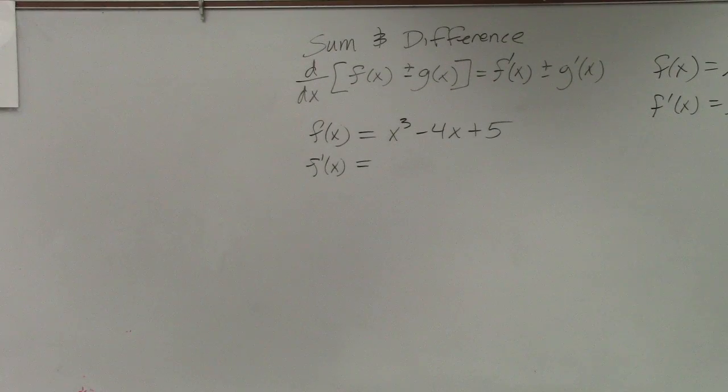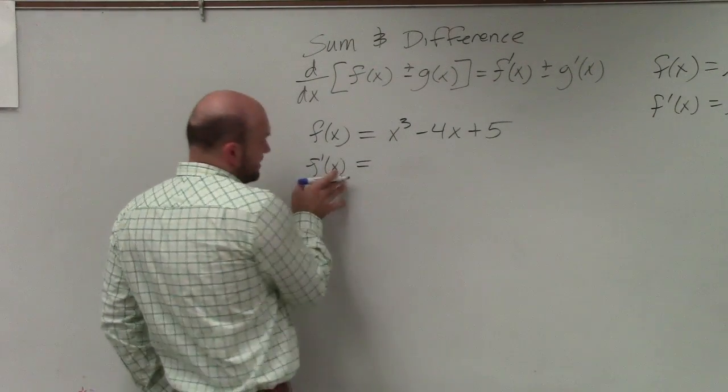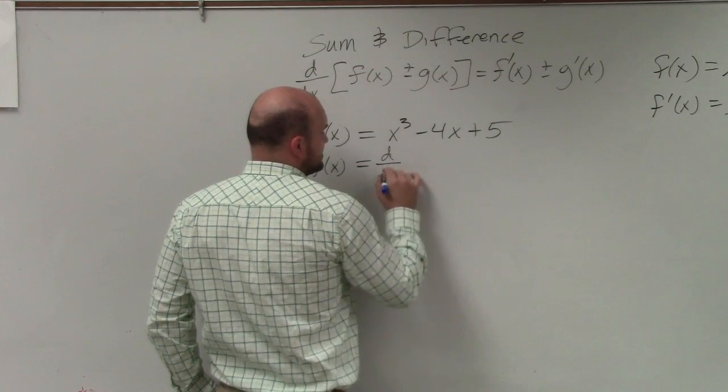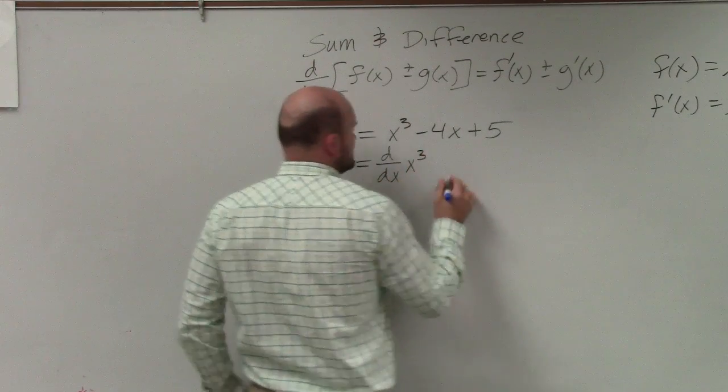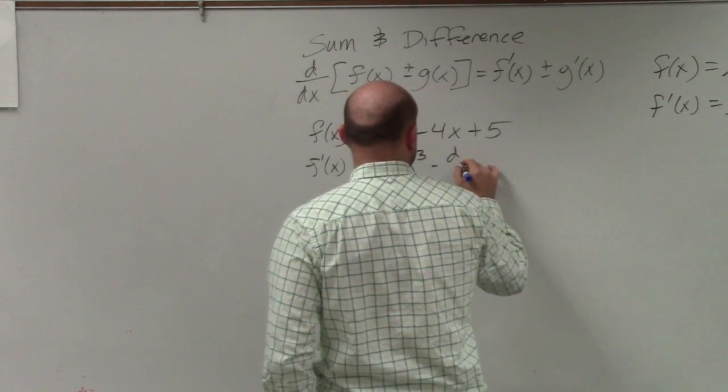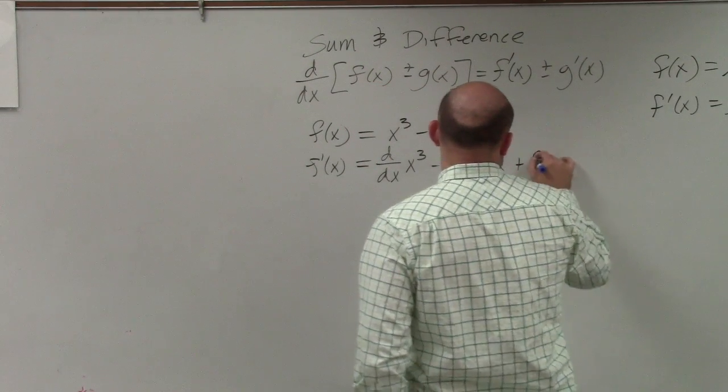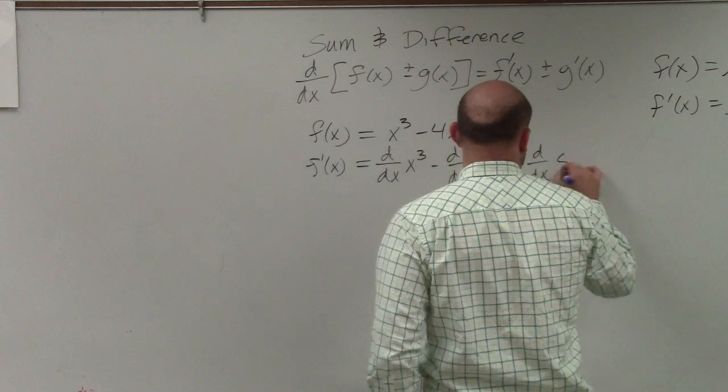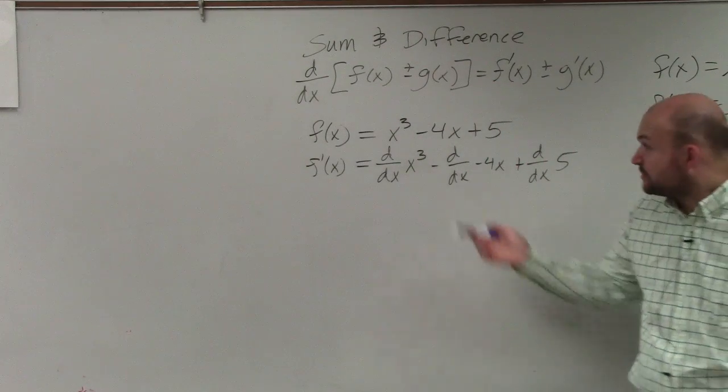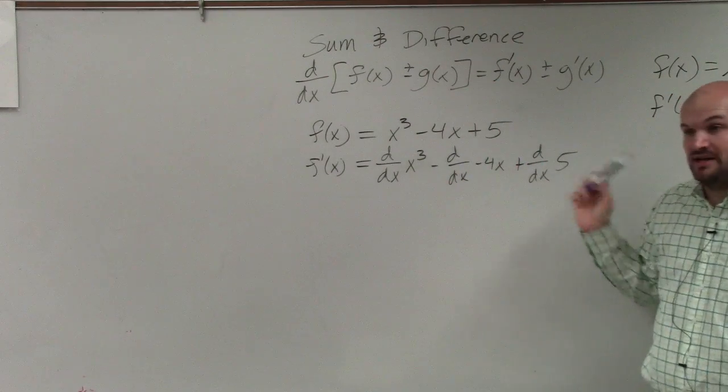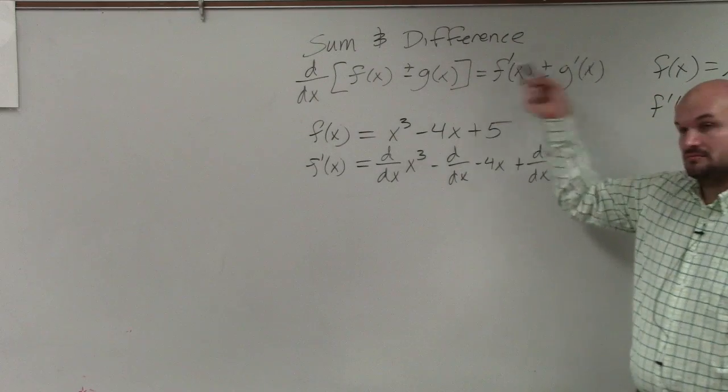So using the power rule to find this derivative, we're looking for d/dx of x³ minus d/dx of -4x plus d/dx of 5. Basically, we're finding the derivative of each and every one of these functions. OK?